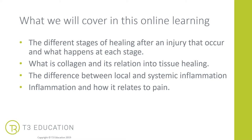What we will cover in this online learning: we're going to discuss the different stages of healing that occurs after an injury and what happens at each individual stage. We're going to discuss what collagen is and its relation to tissue healing, the difference between local and systemic inflammation, and how inflammation relates to pain. This is a follow on from your level three learning, going a little bit deeper to support your clients within your sports massage clinics.